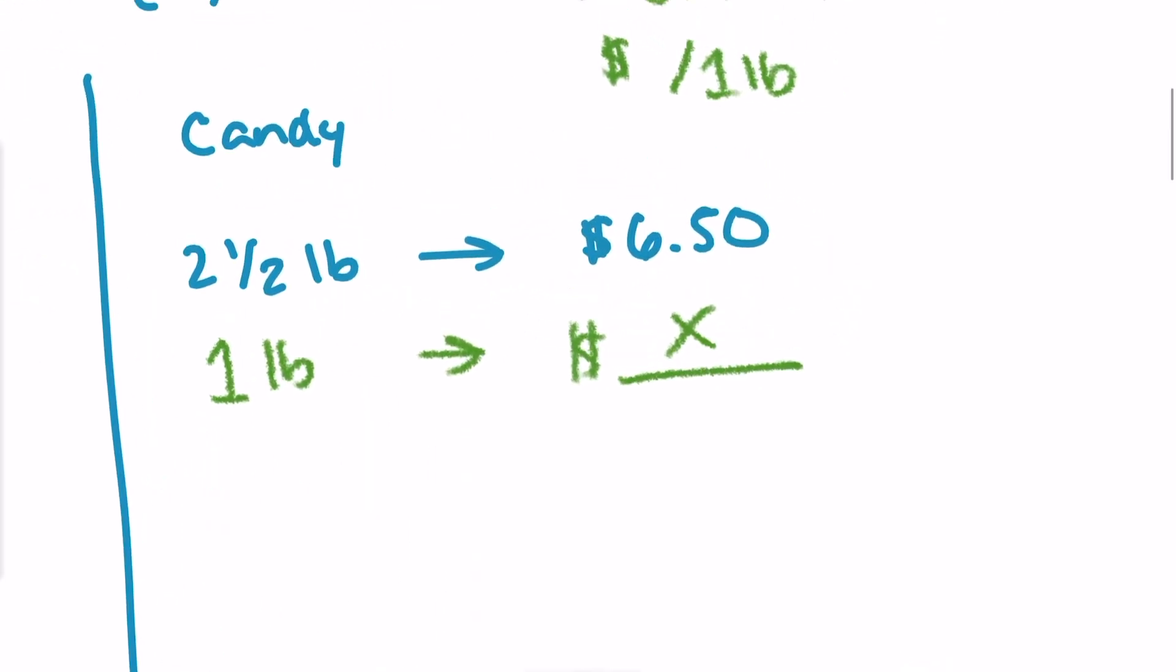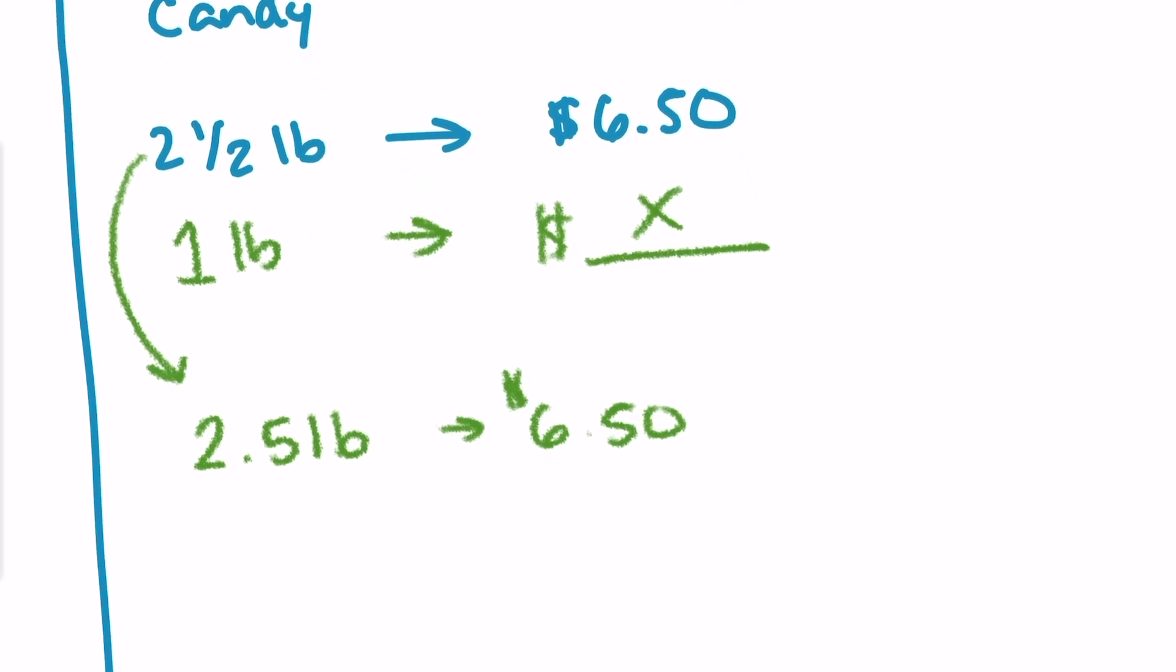Let's start with this Candyopolis store. I know that Candyopolis is selling a 2.5 pound bag for $6.50. I don't want to deal with a fraction, so I'm just going to turn that into a decimal. 2.5 pounds is selling for $6.50. I have a ratio. I could set it up, figuring out price per pound. Now, there are some shortcuts, and if you know a shortcut, feel free to go and use it. But we're going to set up a regular ratio right now, the long way.